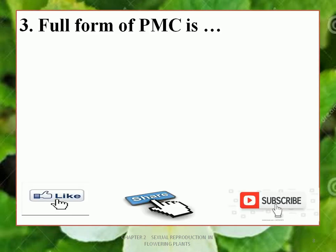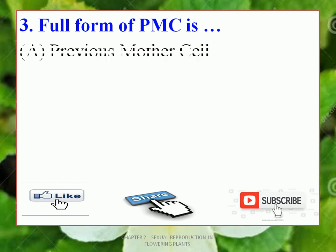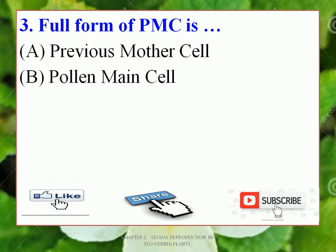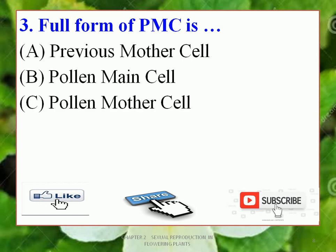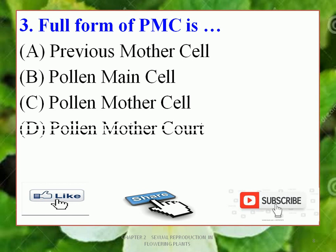Question 3: Full form of PMC is DASH. Options: A. Previous Mother Cell, B. Pollen Main Cell, C. Pollen Mother Cell, D. Pollen Mother Coat. The correct option is C — Pollen Mother Cell. The full form of PMC is Pollen Mother Cell.